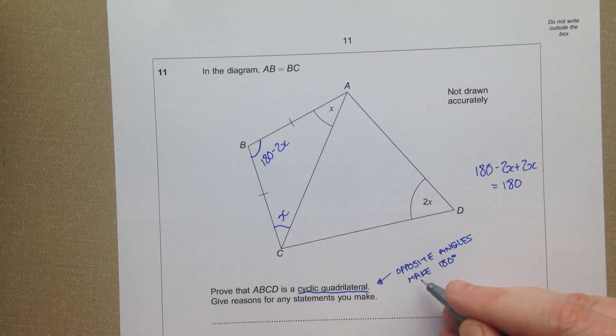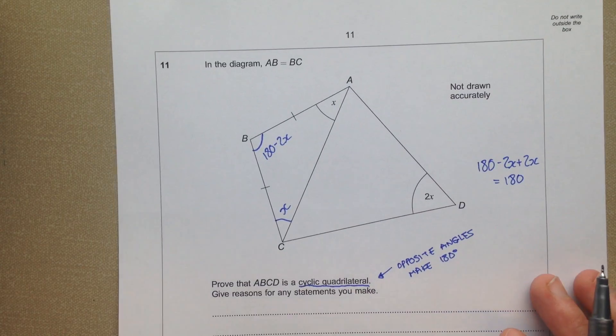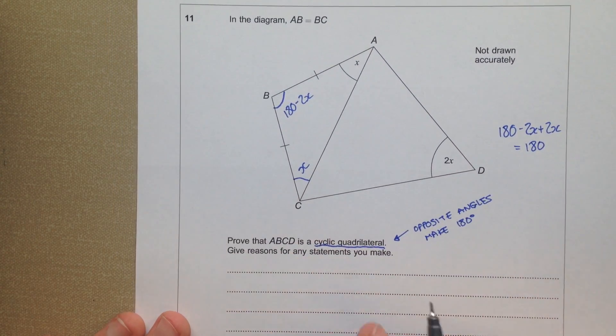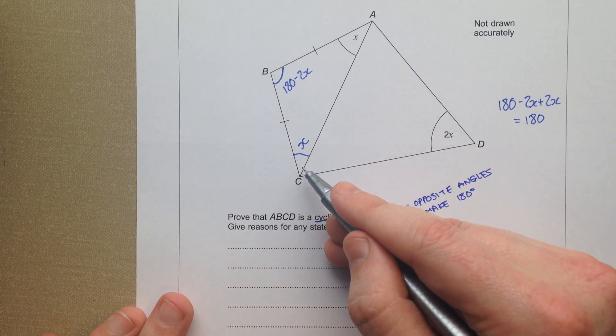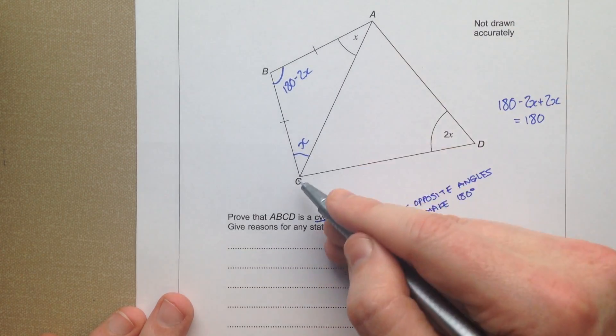So there we are. The opposite angles make 180 degrees. So that's our proof. So we just have to write that down now. Give reasons for any statements you make. So first of all we did this one, this angle here, ACB.